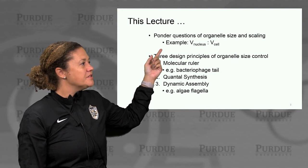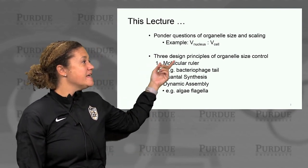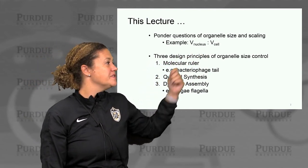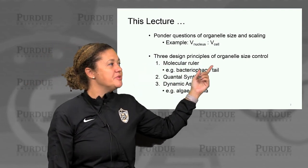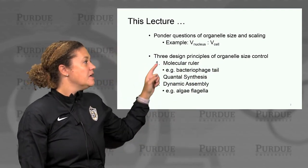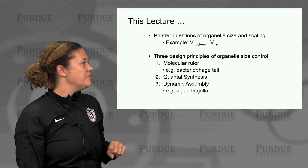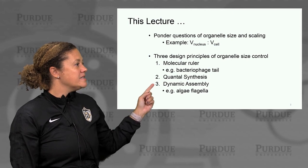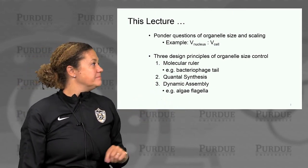We'll first ponder some questions of organelle size and scaling — for example, the scaling of the volume of the nucleus to the volume of the cell. We'll look at three design principles that control organelle size in cells: molecular ruler, looking at the bacteriophage tail as an example; quantal synthesis; and dynamic assembly, using algae flagella as a model system.